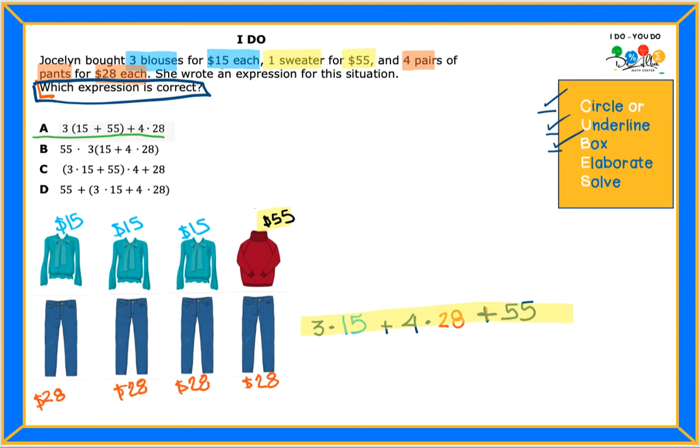So here for letter A. What I notice with letter A is that they are applying distributive property. So that three is multiplying each of the numbers. That three multiplies fifteen. That's going to be three times fifteen. You see that, guys?